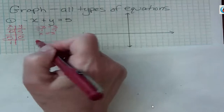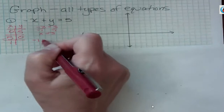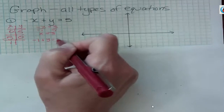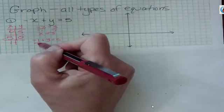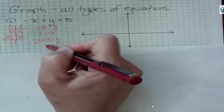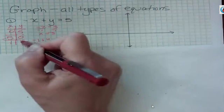Now, what if x is 1? Well, if x is 1, I have negative 1 plus y equals 5. And if I add 1 to both sides, I get y equals 6. So there's my three points, my three ordered pairs.